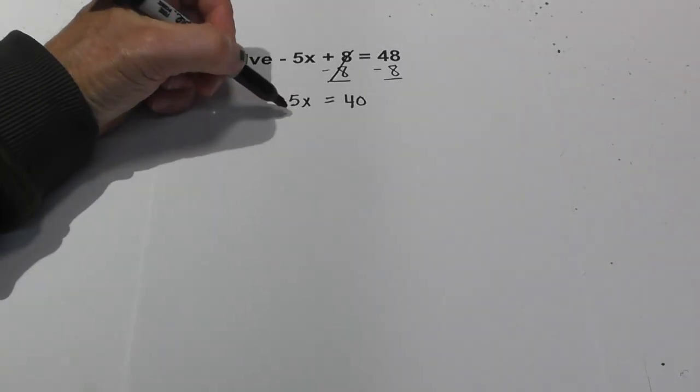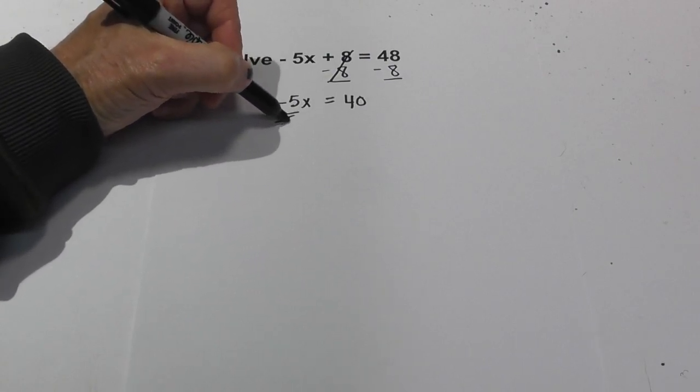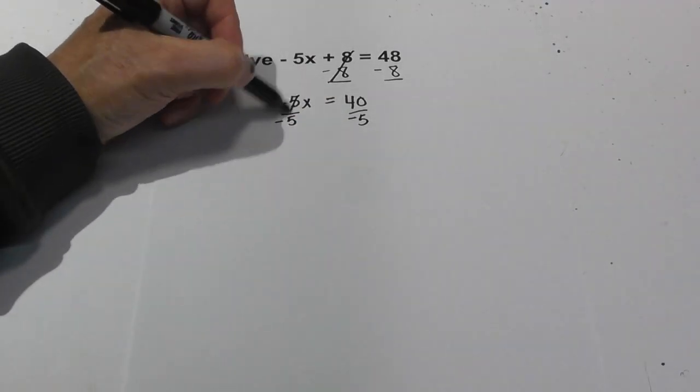Now we need to get rid of multiplication by division. So we'll divide both sides by negative 5. And so these cancel.